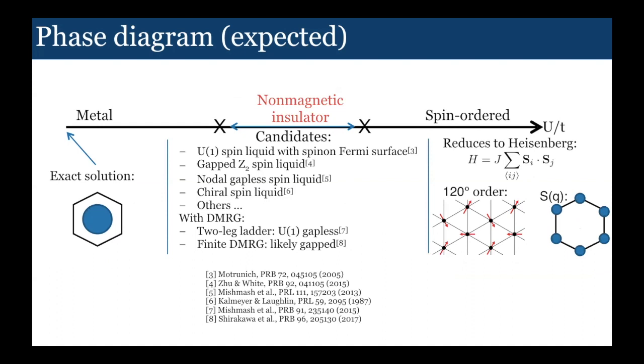Some studies have already looked into this with DMRG. One of them just did a circumference two cylinder and found it was consistent with a nodal spin liquid, a gapless spin liquid. And finite DMRG, meaning finite circumference and finite length, they couldn't tell what type of spin liquid it was, but it seems those systems to actually be a gapped spin liquid.